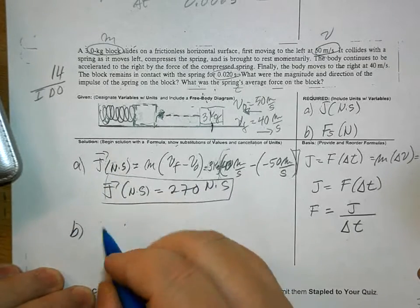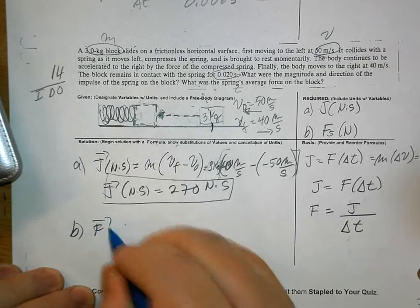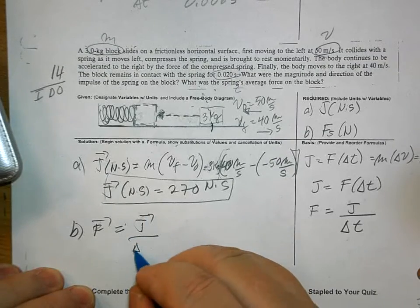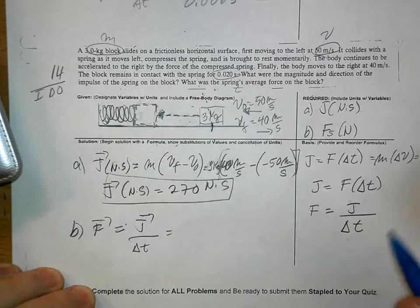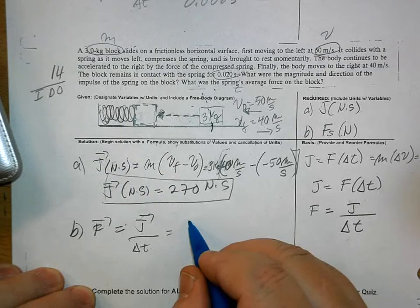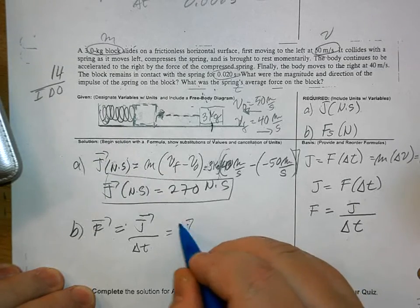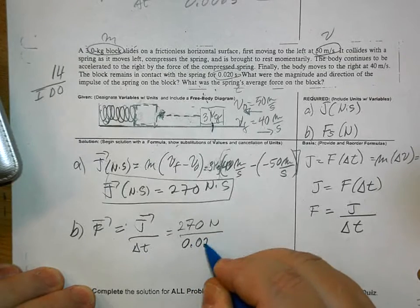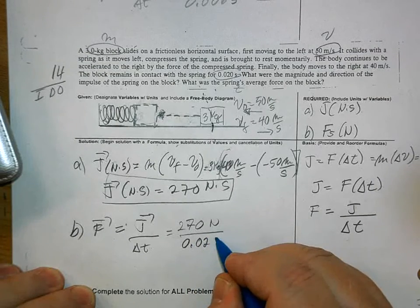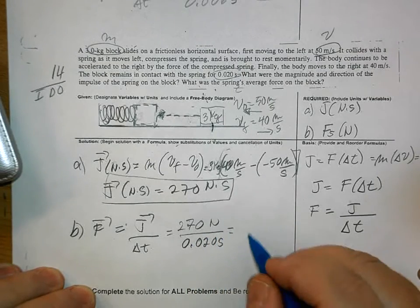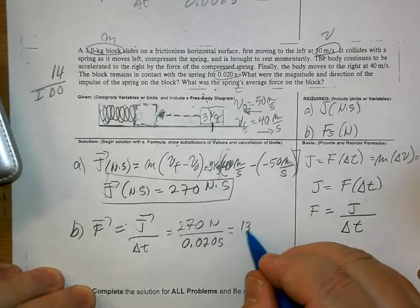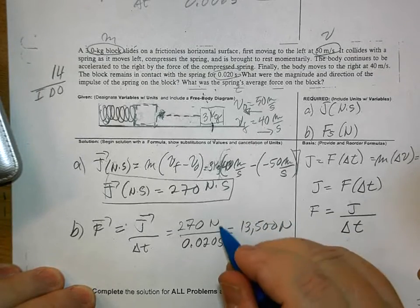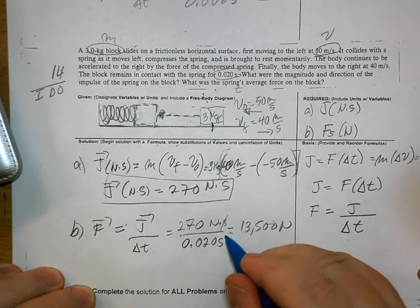Letter B, the force is equal to J over delta T. And J is 270 newton-seconds divided by 0.020 seconds. Newtons is equal to newtons. This cancels.